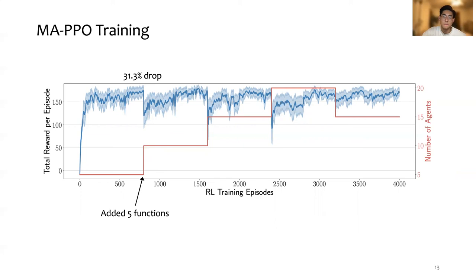After around 300 more episodes, the learning curve of the agents were able to converge again.